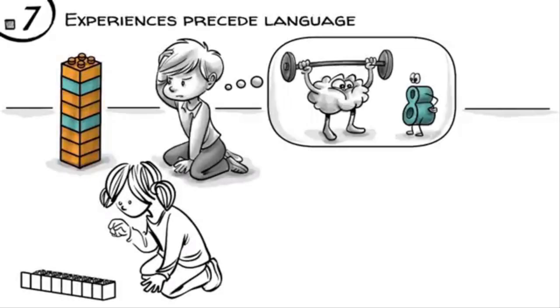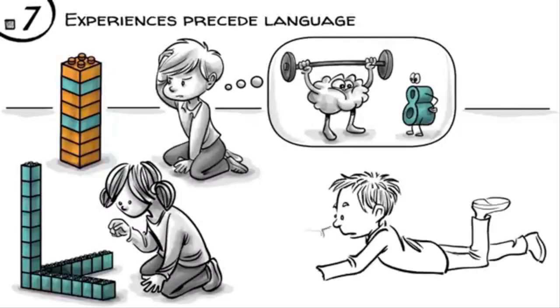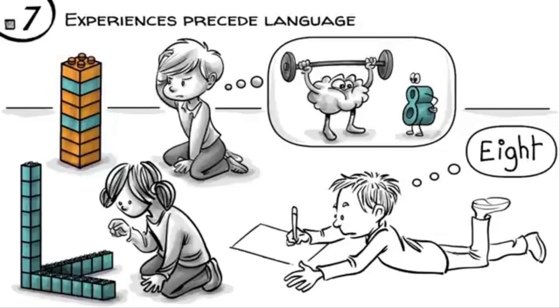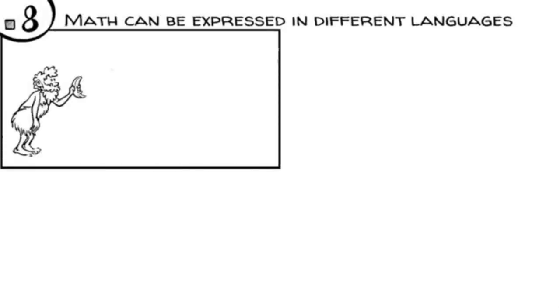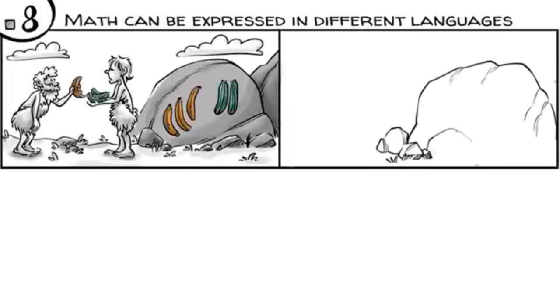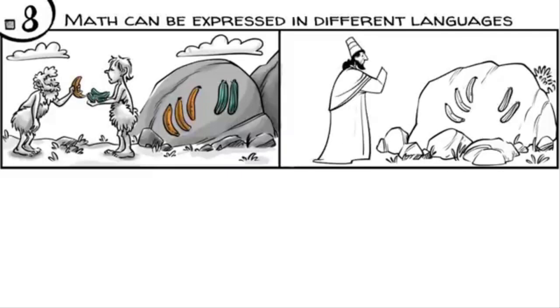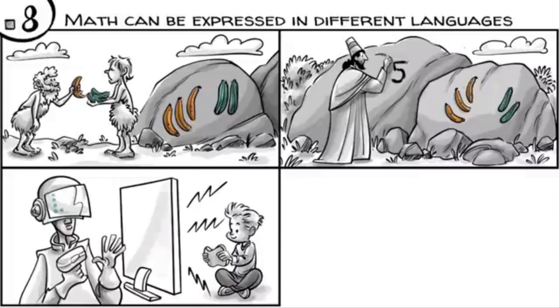Math can be expressed in different languages. A hundred thousand years ago, we used objects to express our mathematical thinking. Later, we used images. Around one thousand years ago, we began to reduce images to Arabic numeral symbols. In future, we might replace symbols with bits or express math in graphic simulations or games.